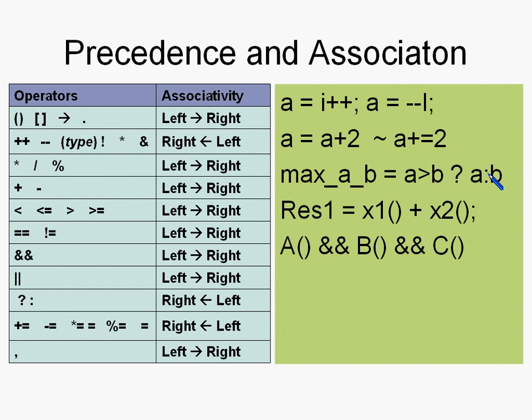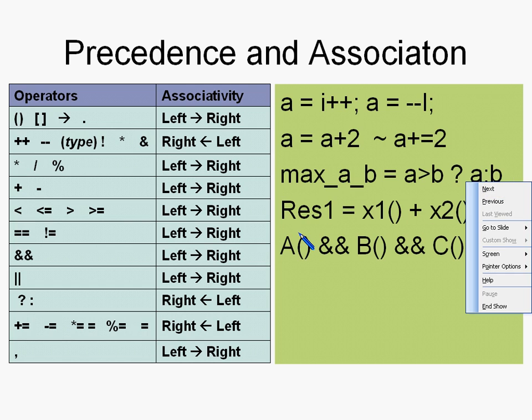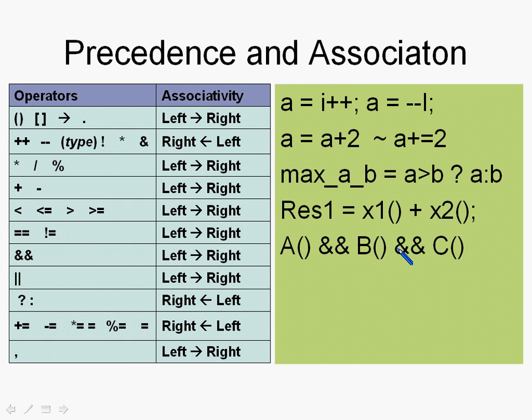There is an exception: for the logical AND (&&) and logical OR (||) operators, order of execution is guaranteed left to right, and evaluation stops as soon as the truth or falsehood of the expression is established. For example, in a() && b() && c(), if a() returns false, b() and c() won't be called. If a() returns true but b() returns false, c() won't be called. Only if both a() and b() return true will c() be called.